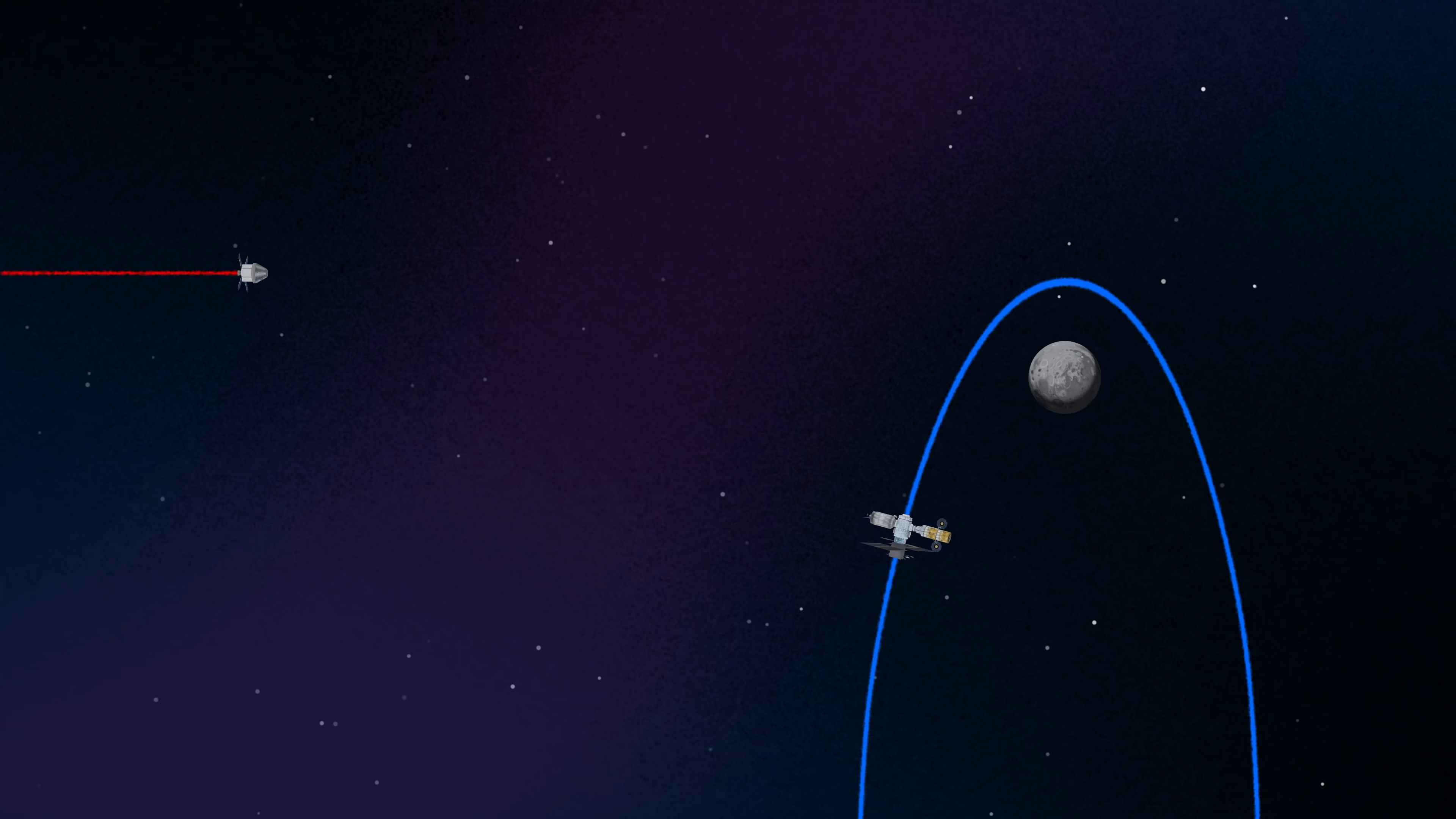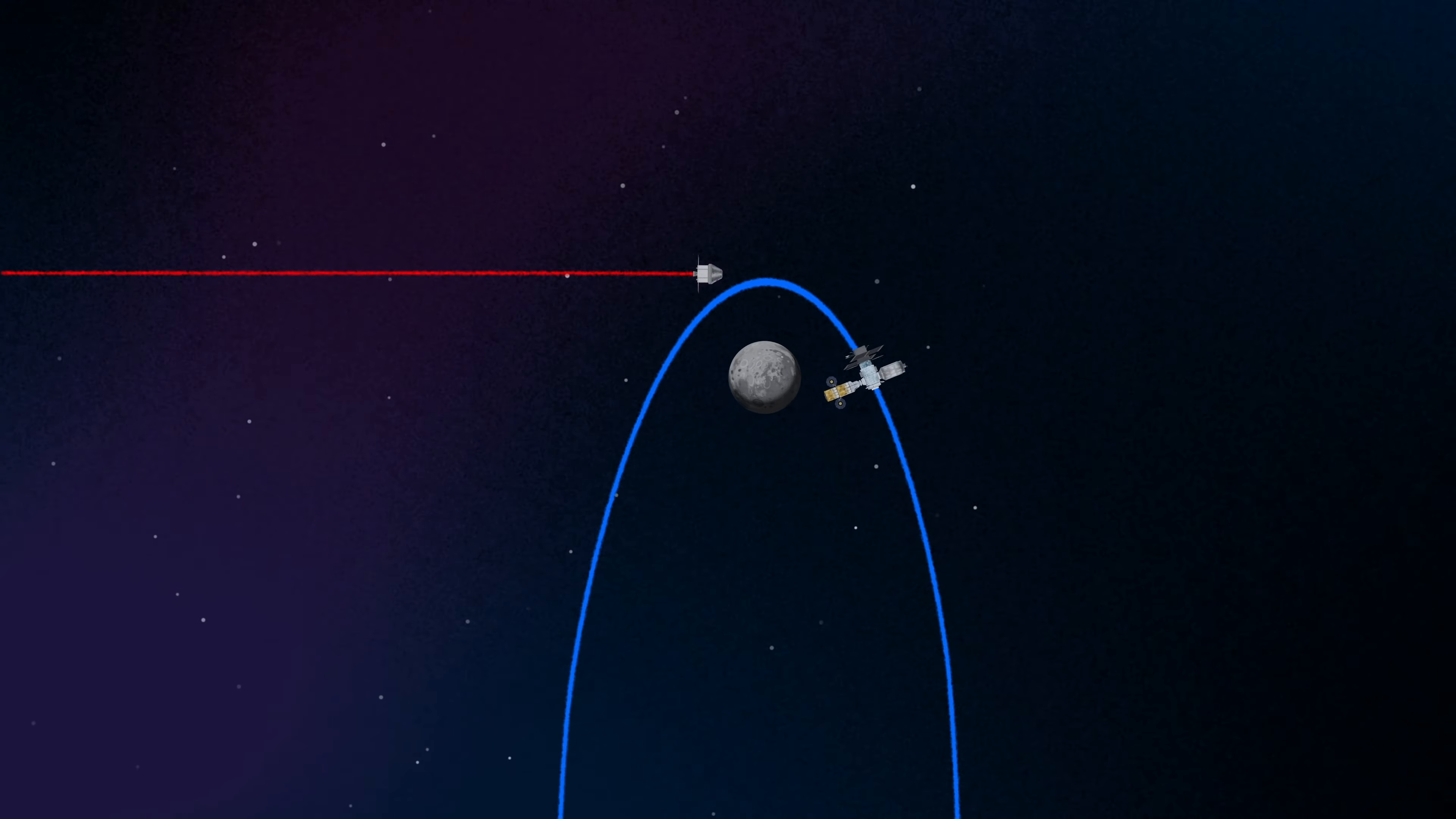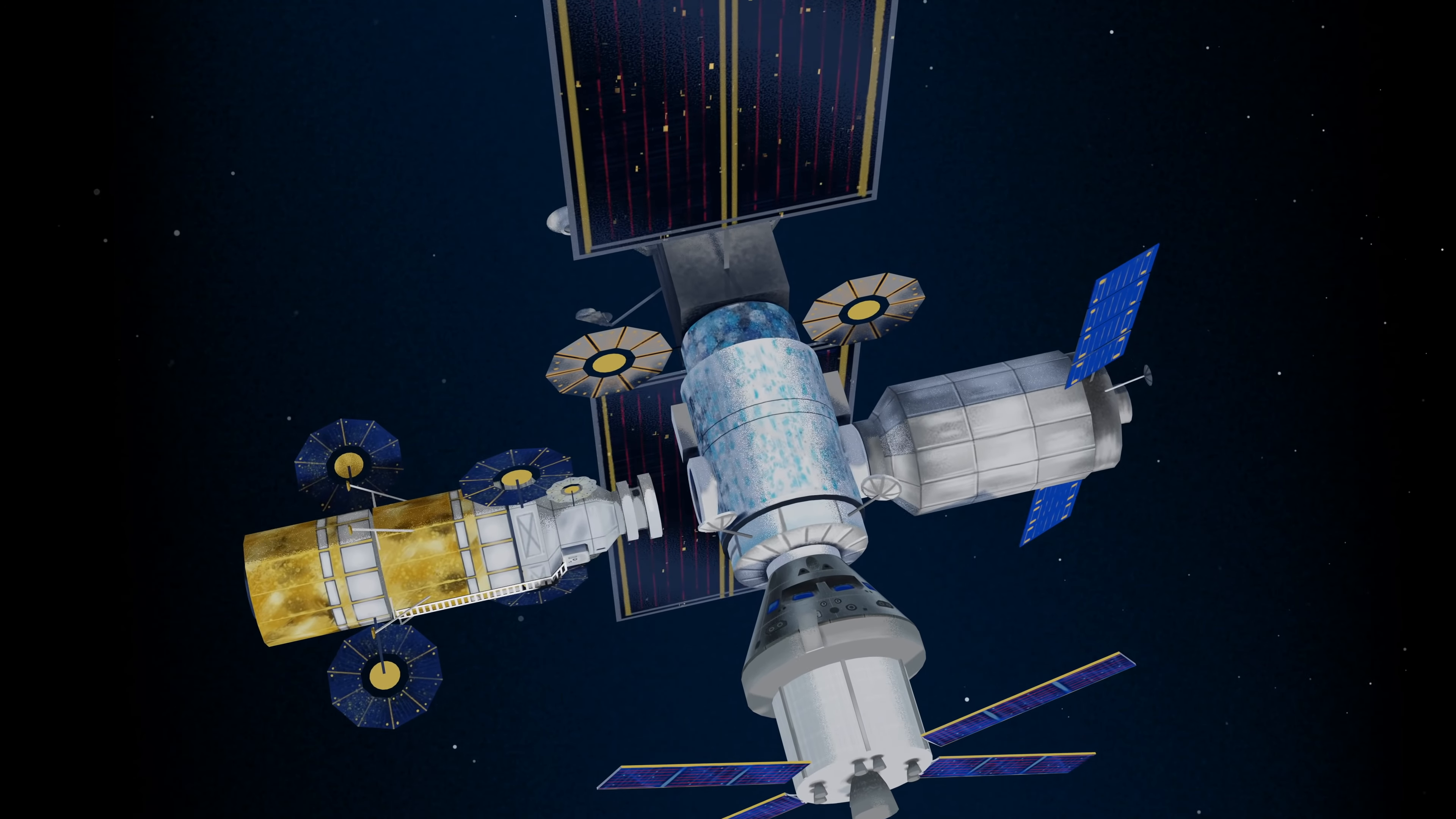Returning to our crew as they approach Gateway, the Orion must match the elliptical orbit of the station in order to successfully dock. Once on board, pre-selected crew members transfer to the lunar lander, while those assigned to Gateway remain on station.